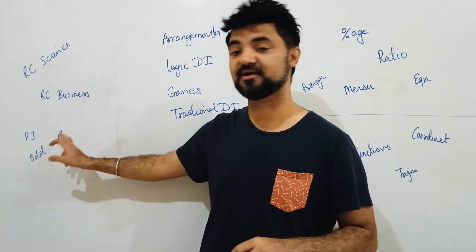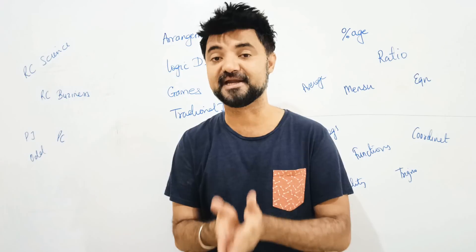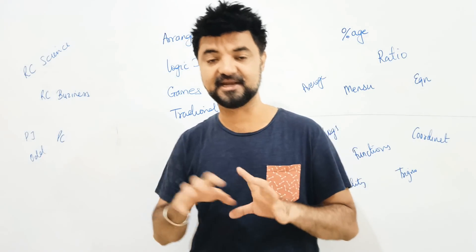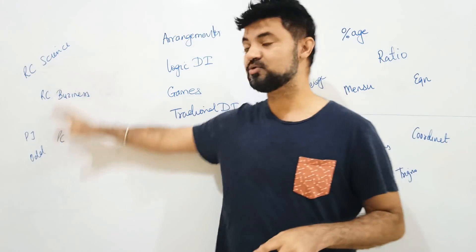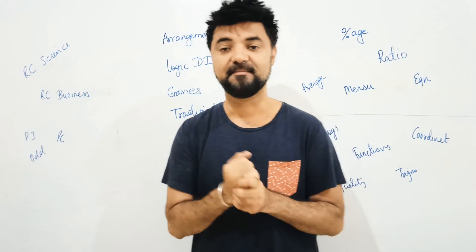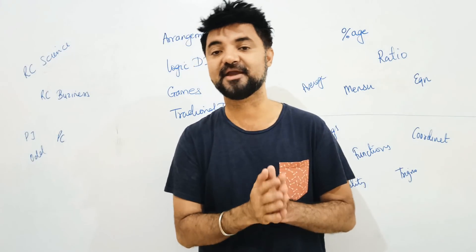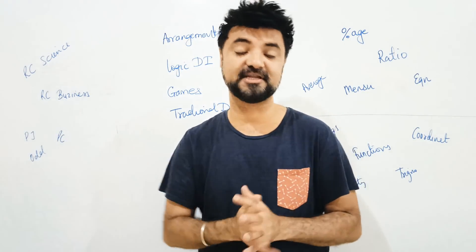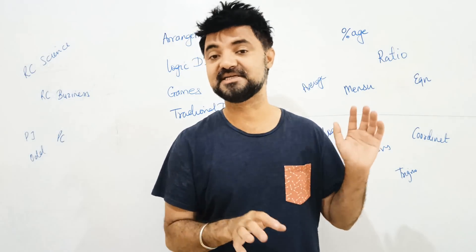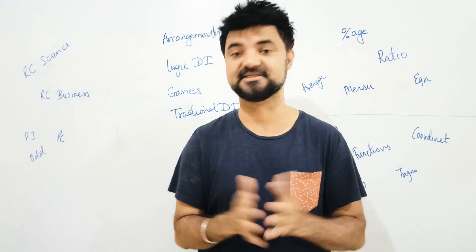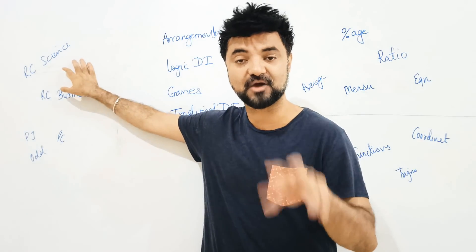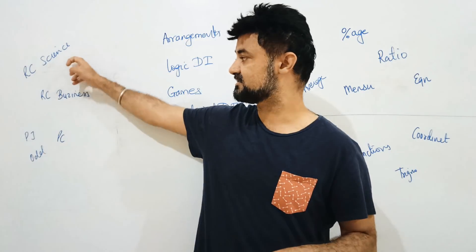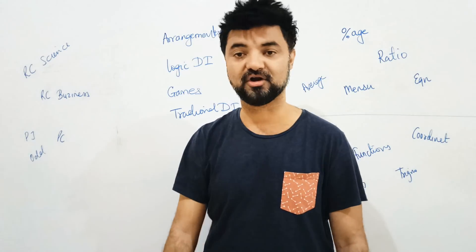My major focus was also on para jumble, odd man out, and para completion. A few of them were TITA-based questions with no negative marking, so I focused on those topics. That ensured I crossed 12 correct marks in the CAT paper, which is around 85 percentile. I attempted around 20 marks' worth of questions, with 70% accuracy giving about 14 correct. If I was in doubt between two options I just left that question. I focused only on these 5 areas: science-based RCs, business-based RCs, para jumble, para completion, and odd man out — and I sailed through.